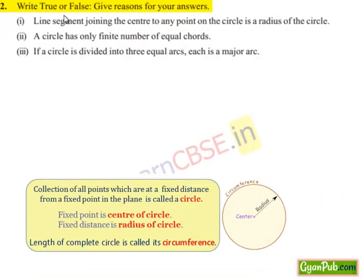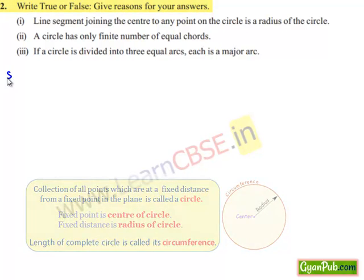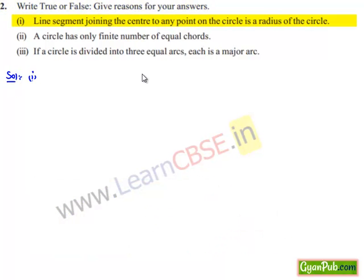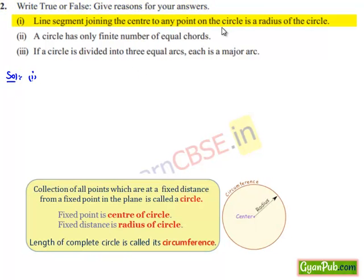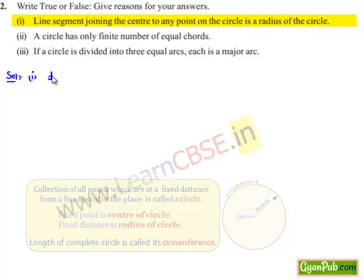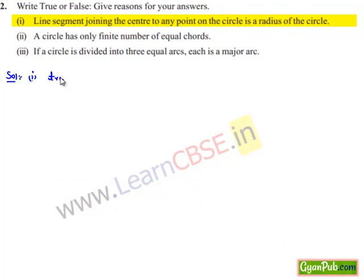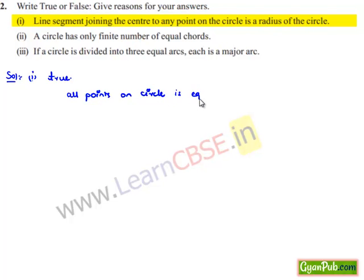Moving on to the second question: true or false, give reasons for your answers. Moving on to the solution for the first bit: the line segment joining the center to any point on the circle is called the radius of the circle — that is true, because all the points of the circle are equidistant from the center, and that equal distance is known as the radius.